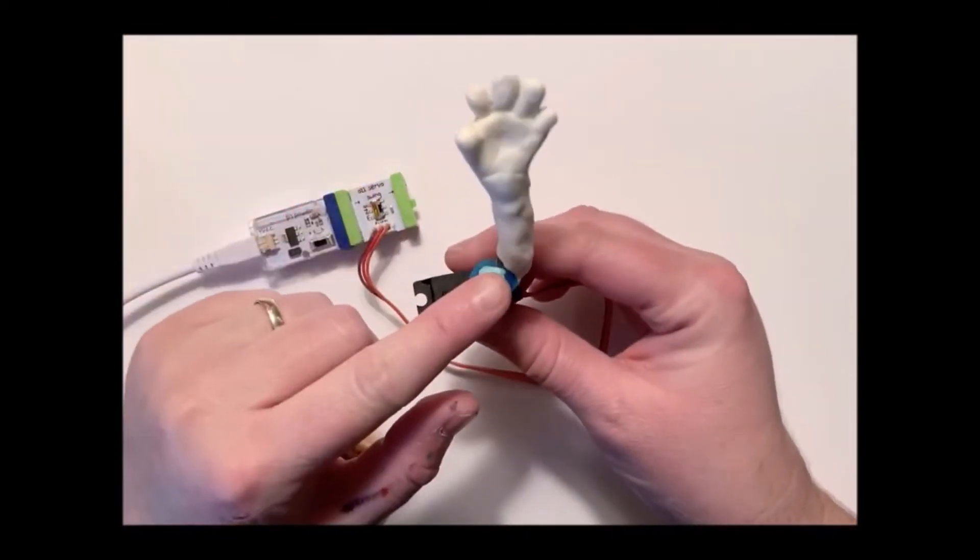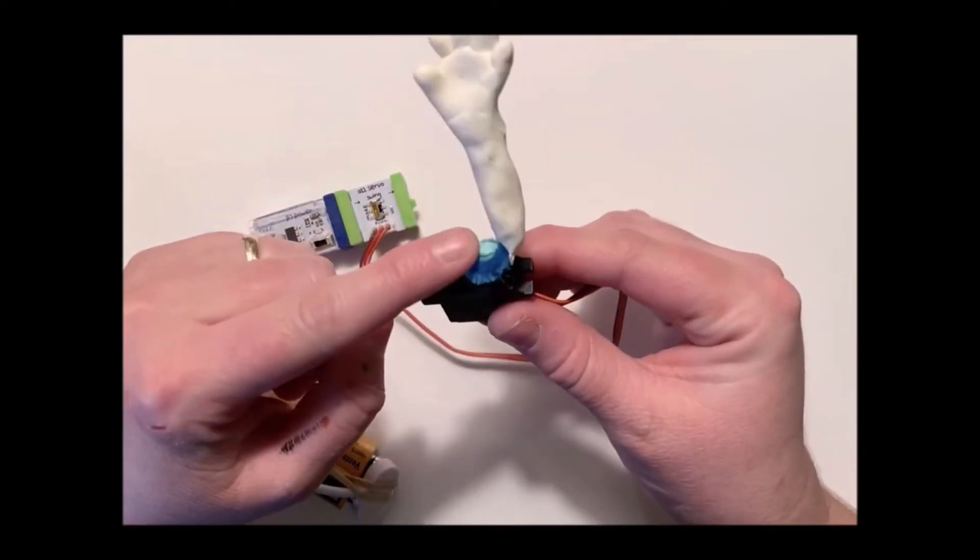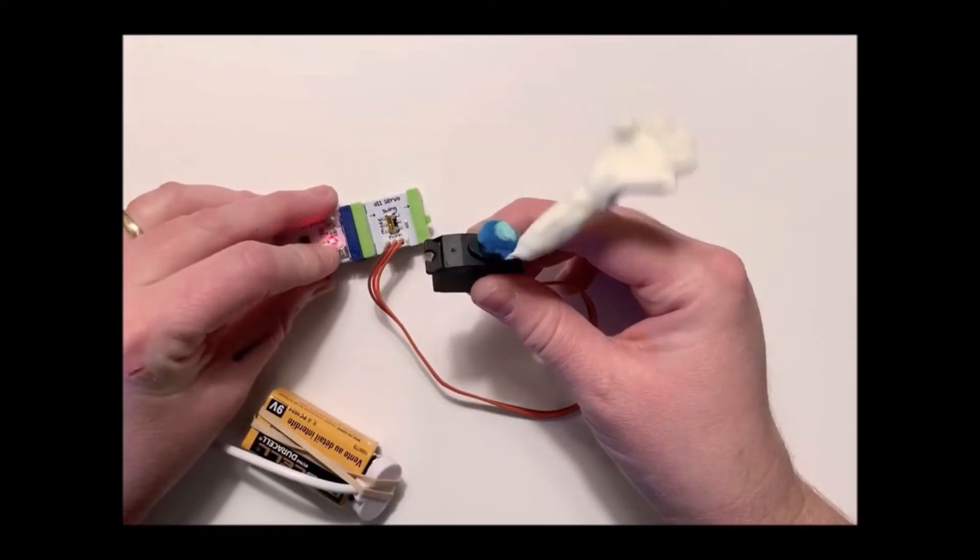So what I've done is I actually made a hand out of model magic clay and attached it to this with a little bit of putty and a pipe cleaner that I've hidden inside of the hand. So if I turn it on,